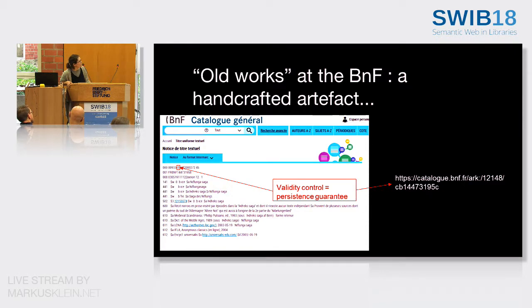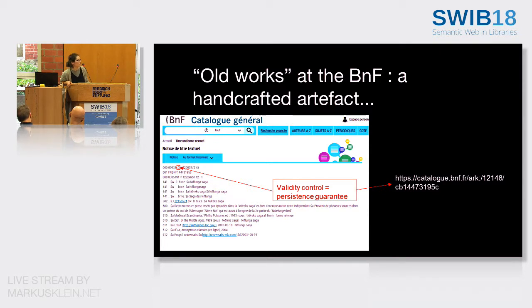The specificity of those handcrafted artifacts — these old works — is that they go through a work validation workflow, a validation process. They are checked several times. You can see in the INTERMARC zone that in the ninth position there is an indicator of validity: zero is for a completely validated work. We have sometimes non-validated works, but they're not disseminated in the data.bnf.fr interface because they're not validated.